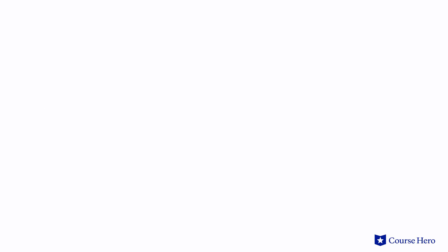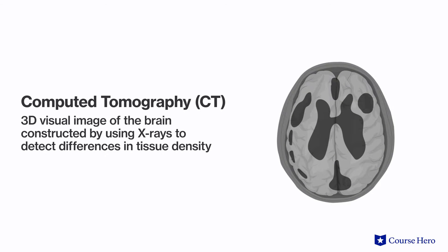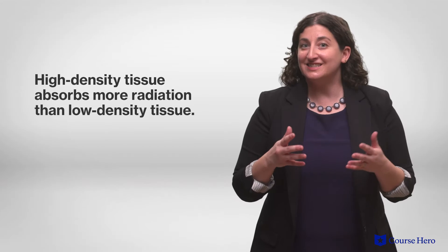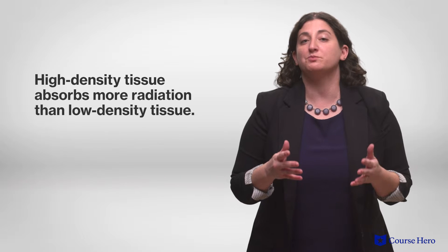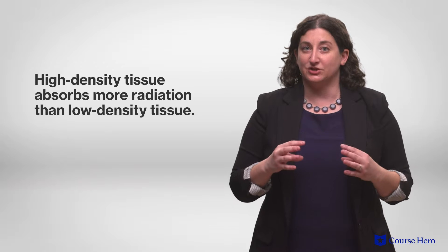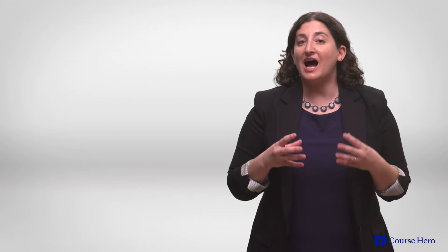A computed tomography, or CT scan, produces a 3D visual image of the brain constructed by using x-rays to detect differences in tissue density. High-density tissue absorbs more radiation than low-density tissue, allowing for the construction of a highly detailed image from x-rays taken from multiple angles.